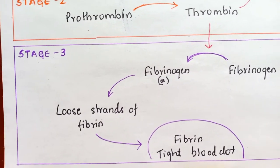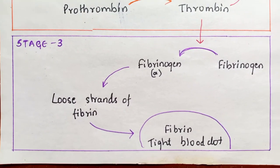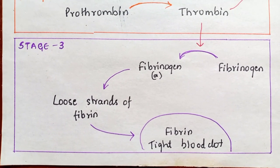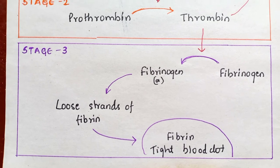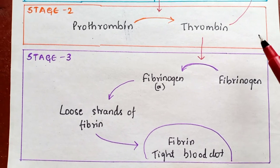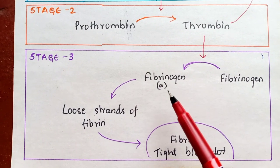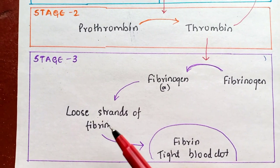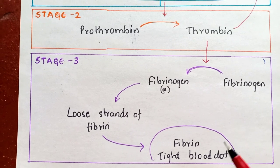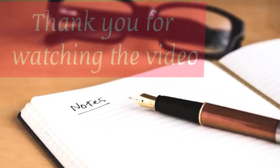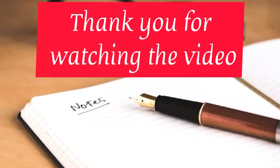Stage 3: thrombin converts fibrinogen into activated fibrinogen. The fibrin polymerizes and forms loosely arranged strands of fibrin, which later form the tight blood clot. Thank you for watching the video — do subscribe.